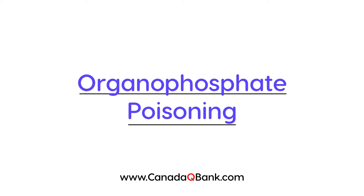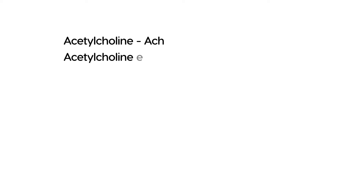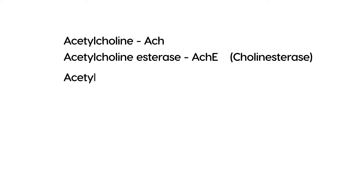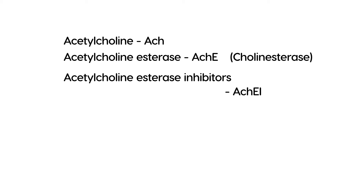Organophosphate poisoning is the topic for this video. First, let's explain some key players and abbreviations. Acetylcholine is the neurotransmitter involved, abbreviated ACH. Acetylcholine esterase is an enzyme that breaks down acetylcholine, abbreviated ACHE — also sometimes referred to as cholinesterase. Acetylcholine esterase inhibitors, abbreviated ACHEI, are molecules that inhibit this enzyme.